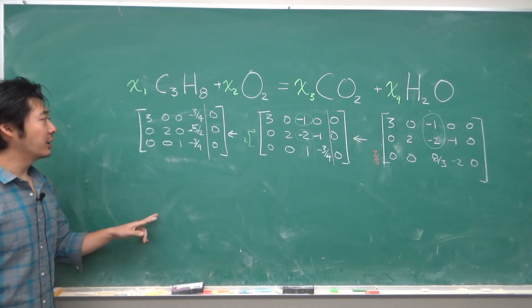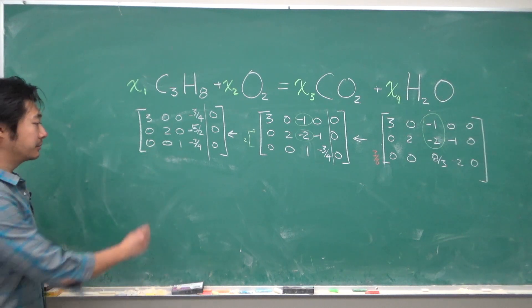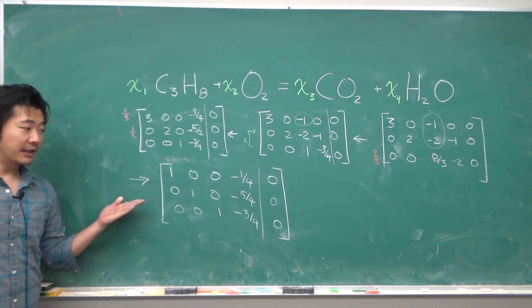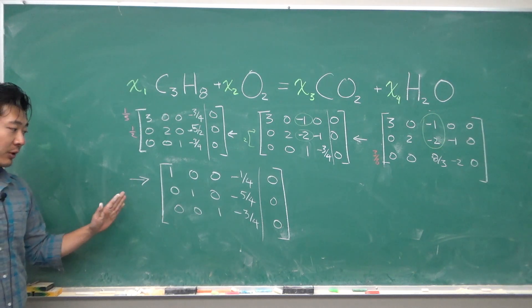We need to make sure that our leading entries are all 1. So dividing by 3 and dividing by 2 will give us something like this. Now this is in reduced row echelon form.